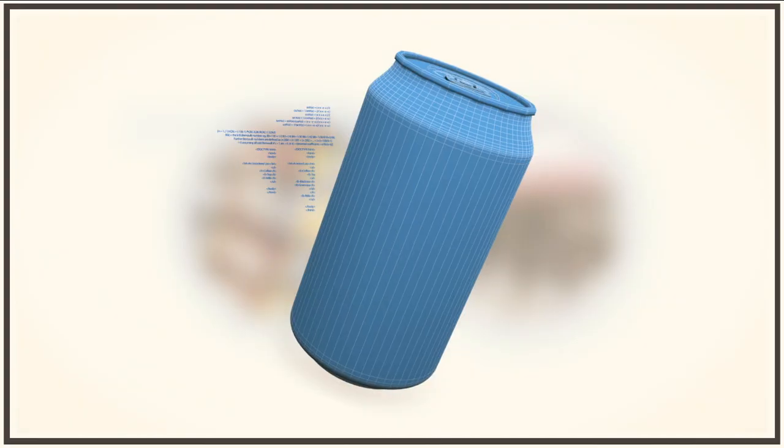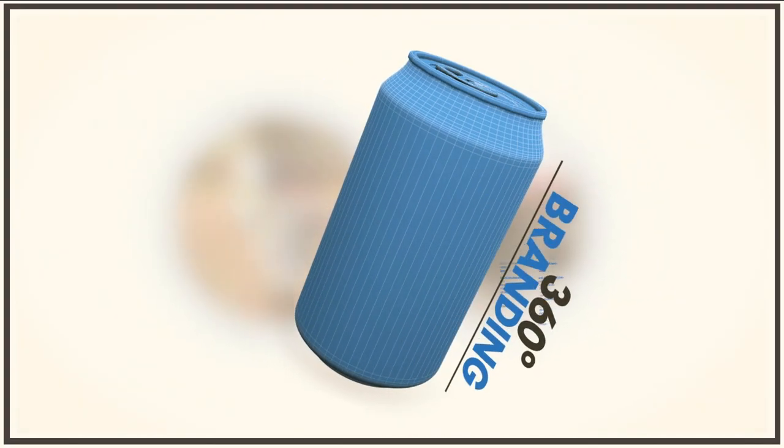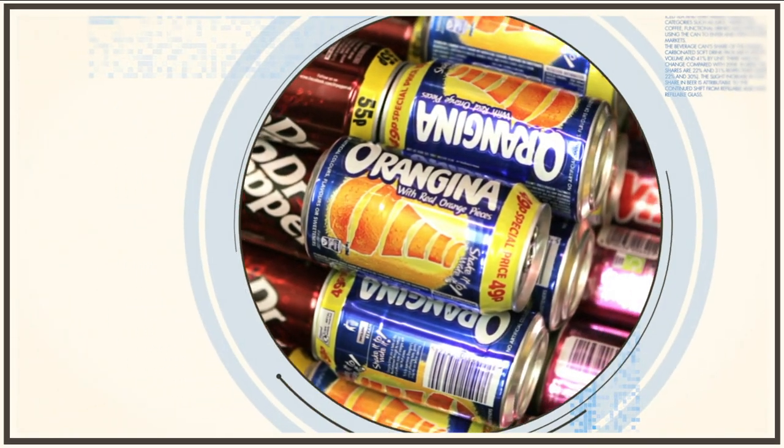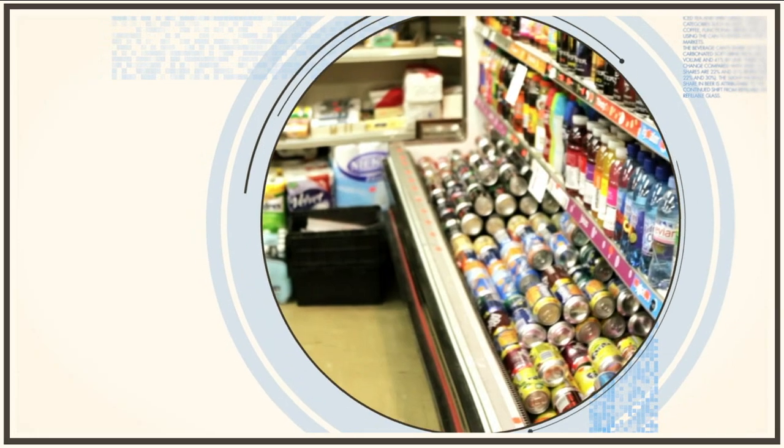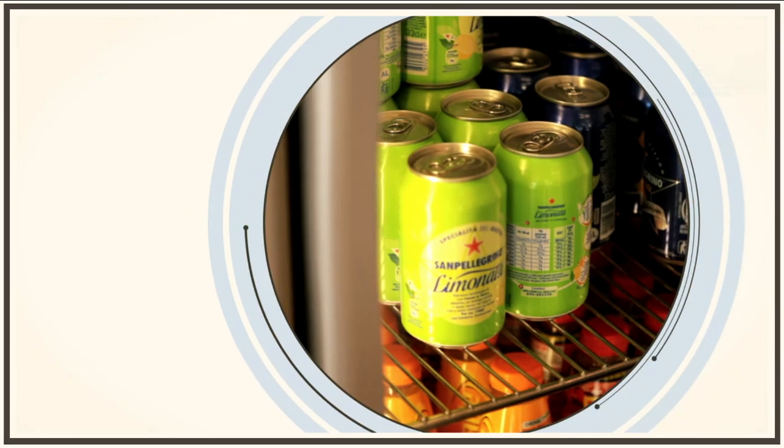The shape of the can lends itself perfectly to 360 degree branding, giving brands the best visual impact on the shelf and making a promise of quality and refreshment to the consumer. And because it's strong and chills faster than other packaging, the can delivers on this promise.